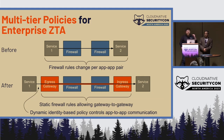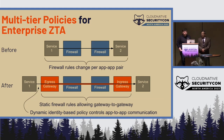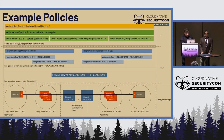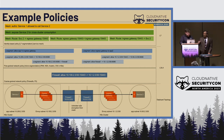We can leverage identity-based policy — which is much more dynamic and easier to maintain — to define who can traverse that gateway connection. These gateways offer a bridge from identity-based policies to network-based policies, participating in both. There are three levels of policies: coarse-grained network, fine-grained network, and then identity-based ones.